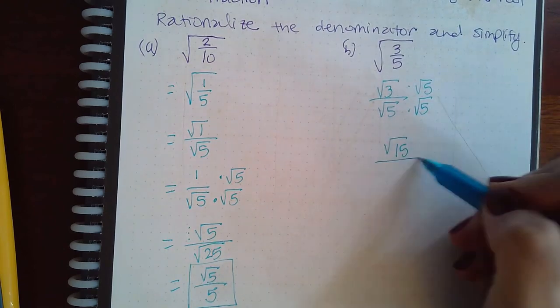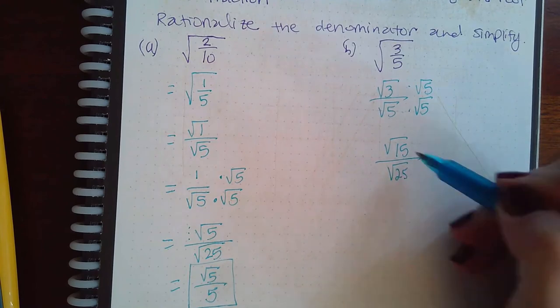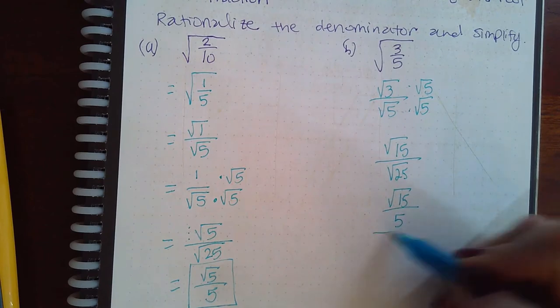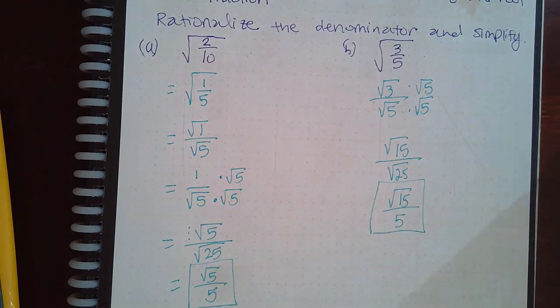And so we get the square root of 15 over the square root of 25. Square root of 15 does not reduce any further. Square root of 25 though is 5, and that is the final answer for that one.